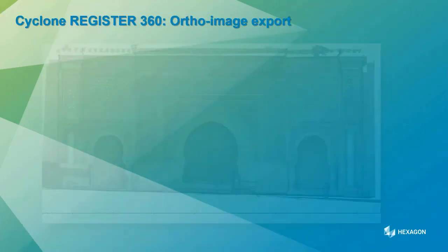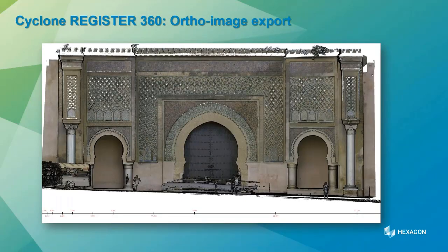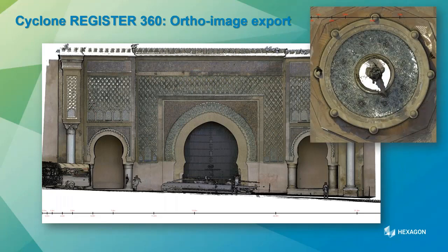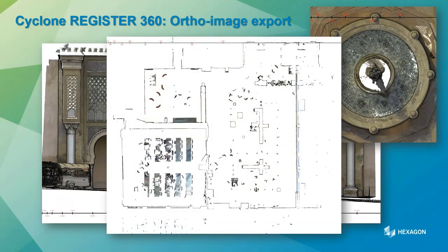Next, there's a new ortho image export from Reg360. It allows you to create facades, plan views, and very quick cross-section views with a scale bar. It publishes both an image file and a DXF file — when you open the DXF, it references the images. So if you're using a lower-end CAD package that doesn't support point clouds, or you want to quickly send a cross-section to someone, this is a very quick and easy deliverable.